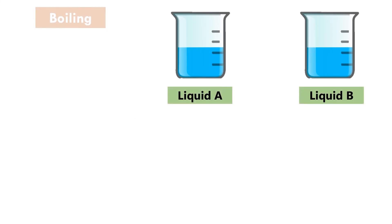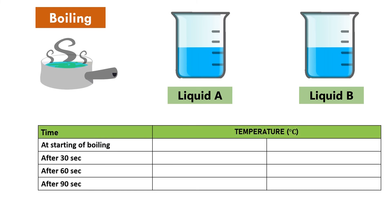During boiling at different times, the temperature of liquid A is the same, while liquid B varies. We can conclude that liquid A is a pure substance, while liquid B is a mixture.